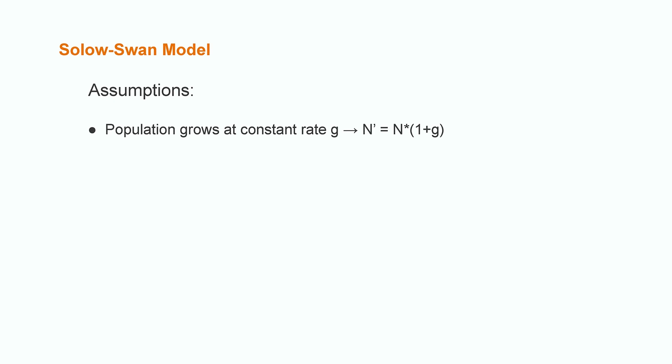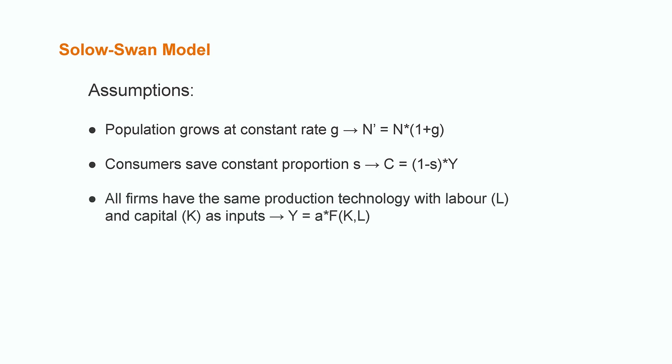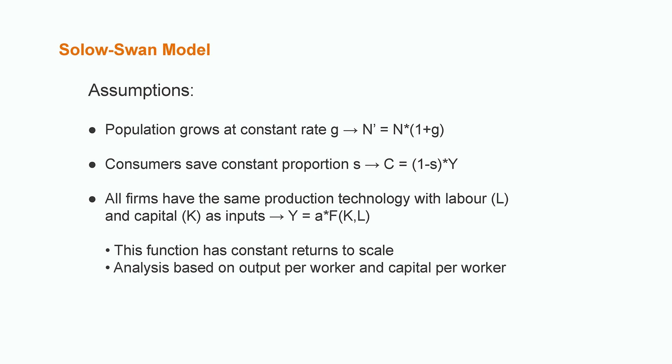This model has the following assumptions. First of all, population grows at a constant rate G, meaning that the future population equals the current population multiplied by the growth rate. Second, all consumers have the same saving proportion S, which affects directly the consumption equation. Then, all firms have the same production technology function, which operates with labor and capital as inputs, and A stands for the technology used for them. This function is also assumed to have constant returns to scale, meaning that if labor increased two times, output would increase two times as well. This leads us to develop our analysis using relative indicators such as output per worker and capital per worker, instead of aggregates.